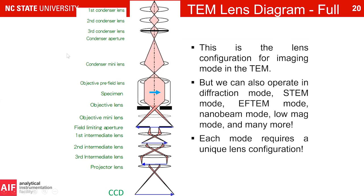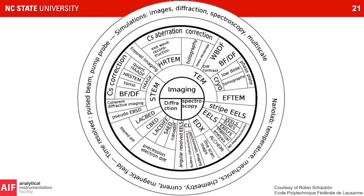Ray diagrams of a TEM show quite a few lens components — about half the elements are still missing here. We have so many lenses to increase the versatility of the microscope. In the old days, dedicated TEMs and dedicated STEMs couldn't do both. Today, microscopes are designed so you can operate in TEM mode, STEM mode, energy-filtered mode, form nano-beams, do very low-mag imaging, and a huge number of configurations — all because we have full control over all different lens elements.